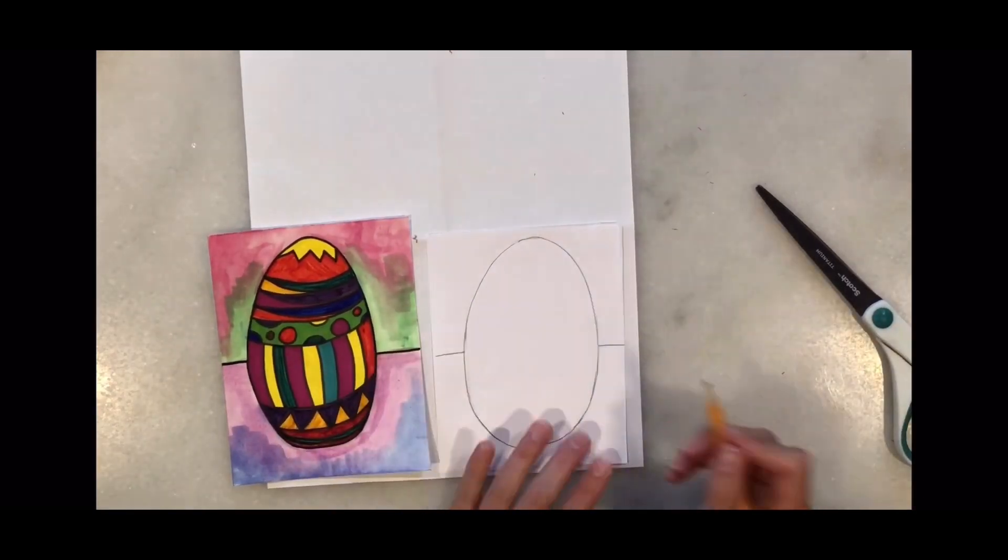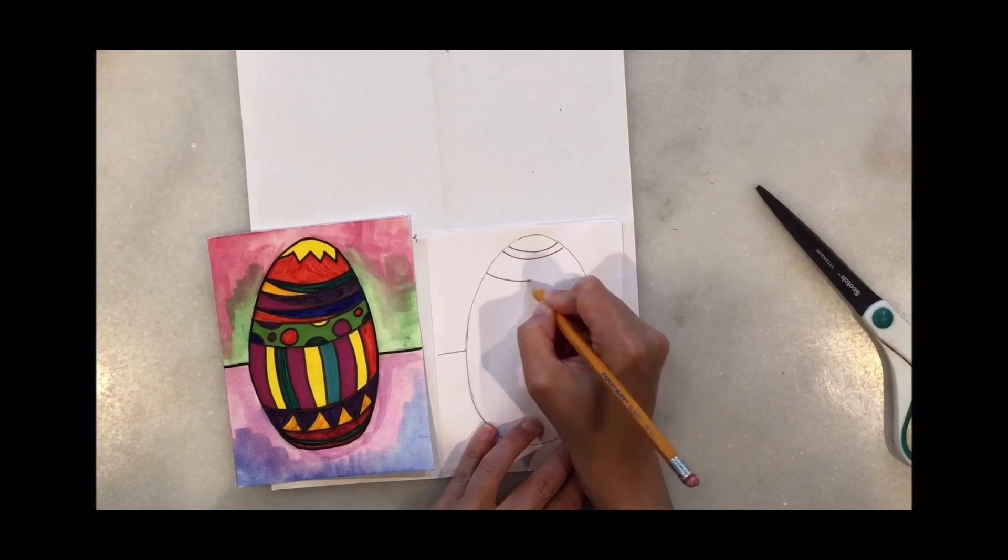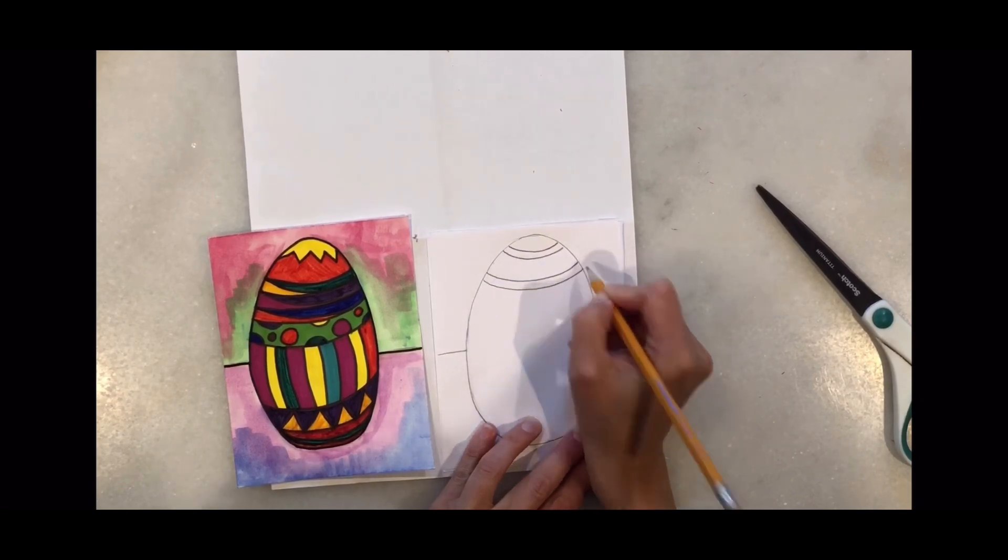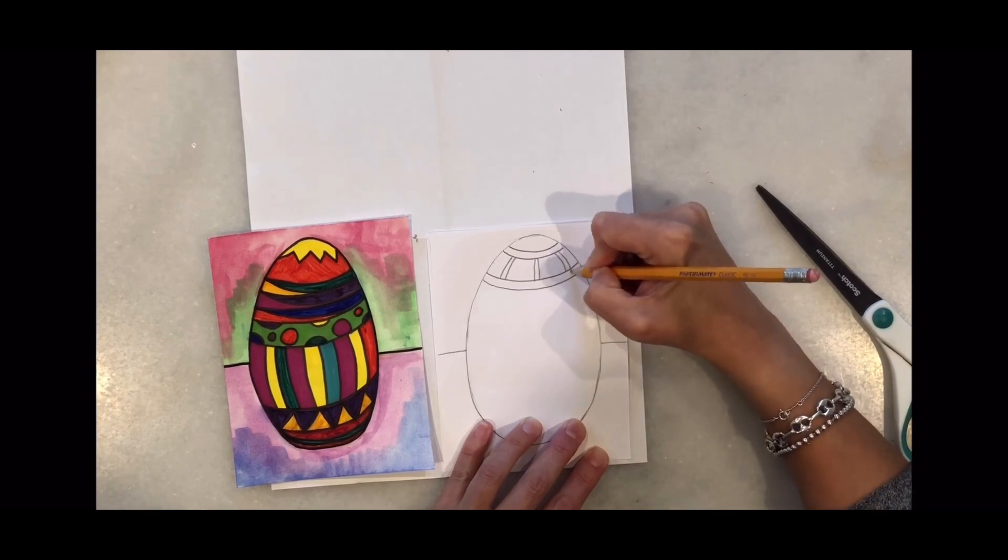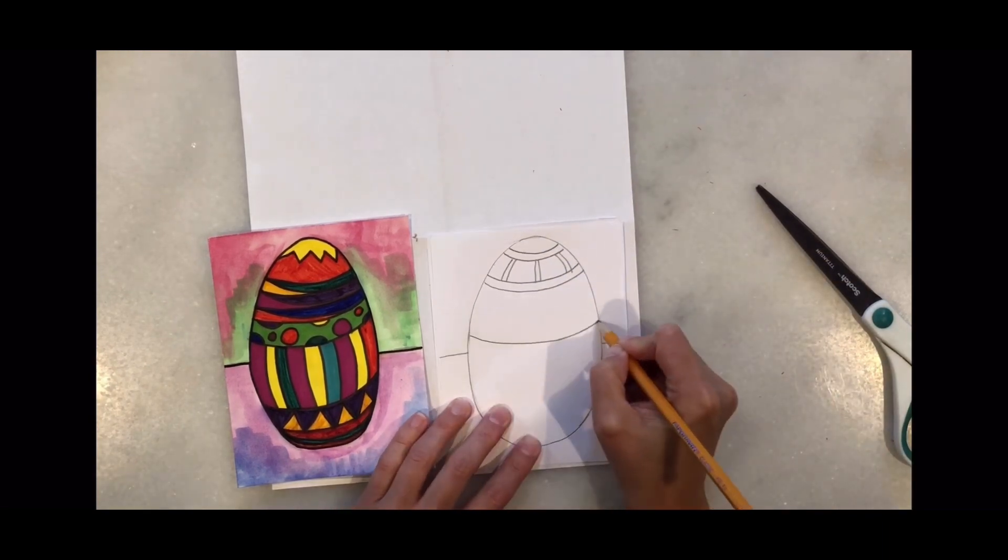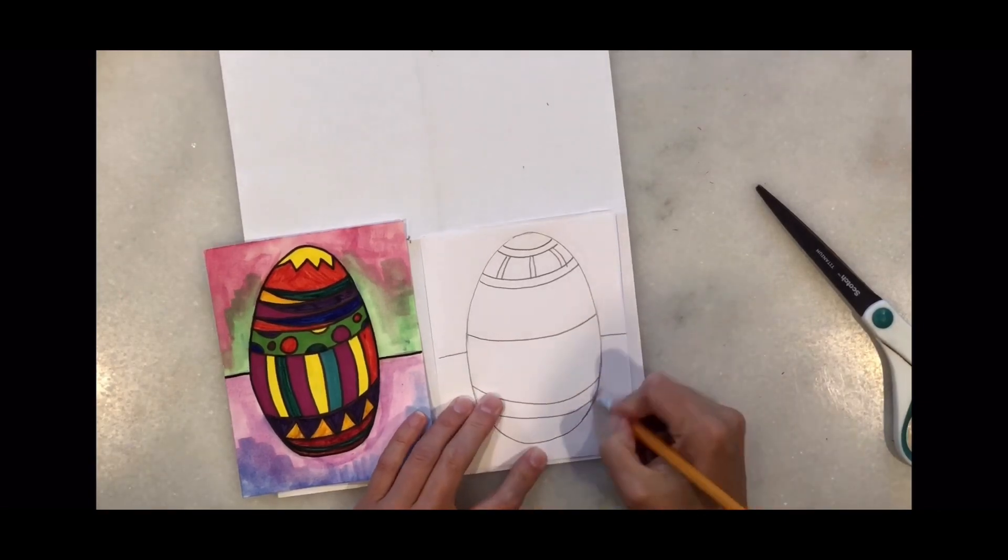Now that you have the right shape, you can start adding the lines. As you can see, I'm drawing a different egg. I'm doing different lines using the whole space, dividing my egg into sections.